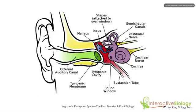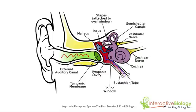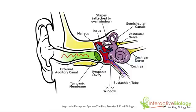Now, here's the deal. In the external auditory canal, we have air. In the eustachian tube, we also have air. However, inside the cochlea, we don't have air — we actually have fluid. Because of that, it's going to be harder to get the fluid inside the cochlea to vibrate than it is to get the air inside the middle ear and inside the outer ear to vibrate.